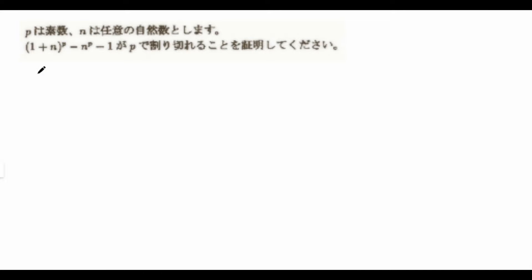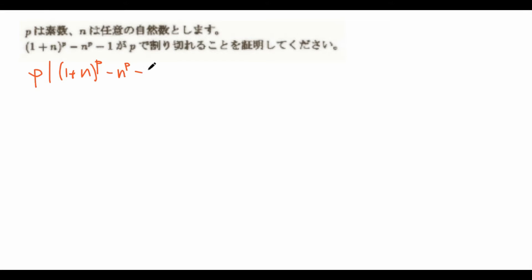It states that if you have p be a prime and n be any integer, then 1 plus n to the power of p minus n to the power of p minus 1 is divisible by p. So if I want to rewrite it: prove that p divides 1 plus n to the power of p minus n to the power of p minus 1.